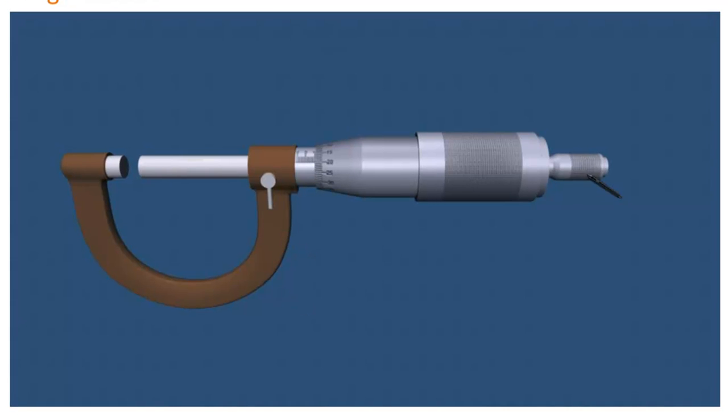Now, this is the screw gauge. Hold this ratchet and move this ratchet in anticlockwise direction such that the stud and the screw opens up, the gap between them increases. The object whose length or diameter has to be measured is fixed between these two.